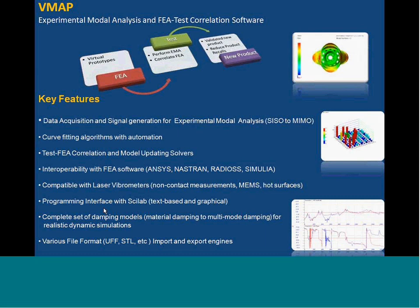VMAP is Vibration Measurement and Analysis Package. It's an experimental modal analysis and FEA-test correlation software product of Tech Passion. It has two parts: one is the data acquisition part, and another is the analysis and correlation part. You can use VMAP to do all kinds of experimental modal analysis — it could be with a hammer or shaker, single input single output, single input multi-output, or multi-input multi-output test.